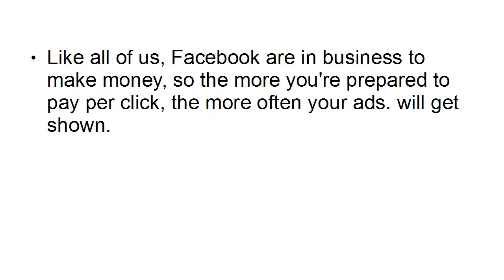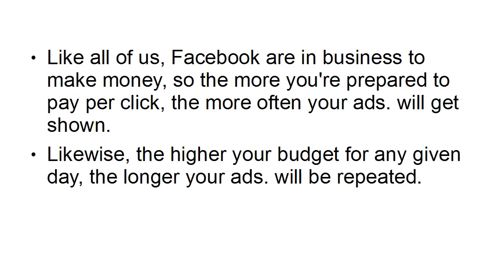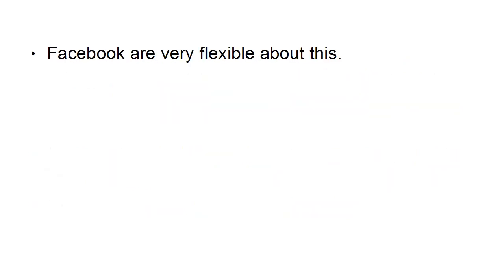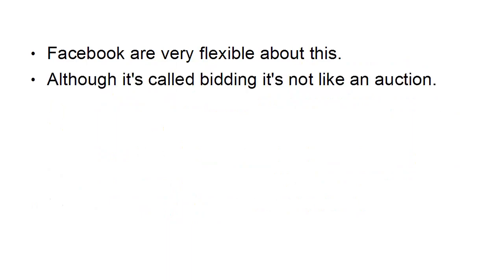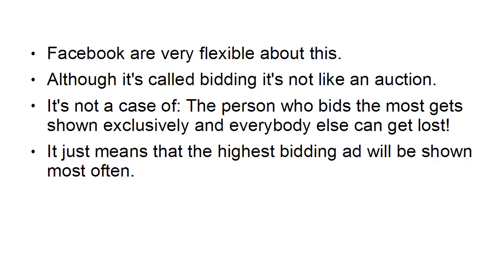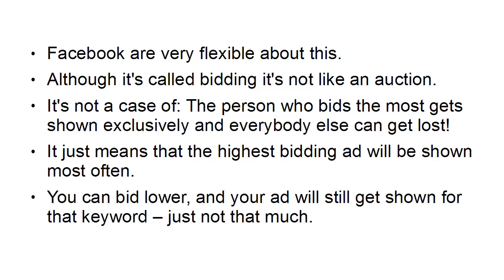Like most of us, Facebook is in business to make money — so the more you're prepared to pay per click, the more often your ads will get shown. Likewise, the higher your budget for any given day, the longer your ads will be repeated. This process is known as bidding. Facebook is very flexible about this — although it's called bidding, it's not like an auction. It's not a case of the person who bids the most gets shown exclusively. It just means the highest bidding ad will be shown the most often. You can bid lower and your ad will still get shown for that keyword, just not as much.